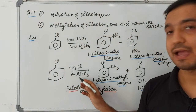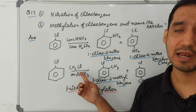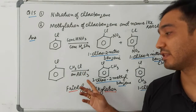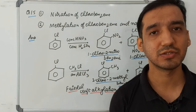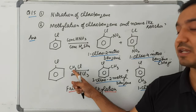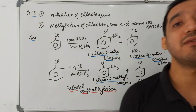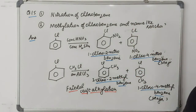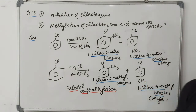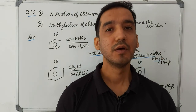Part two: methylation of chlorobenzene — Friedel-Crafts alkylation. Reacting chlorobenzene with CH₃Cl in the presence of anhydrous AlCl₃ generates a CH₃⁺ electrophile (AlCl₃ takes the Cl). The CH₃⁺ electrophile attaches at the ortho or para position. The products are 1-chloro-2-methylbenzene and 1-chloro-4-methylbenzene; the para product is the major product. This reaction is called Friedel-Crafts alkylation.